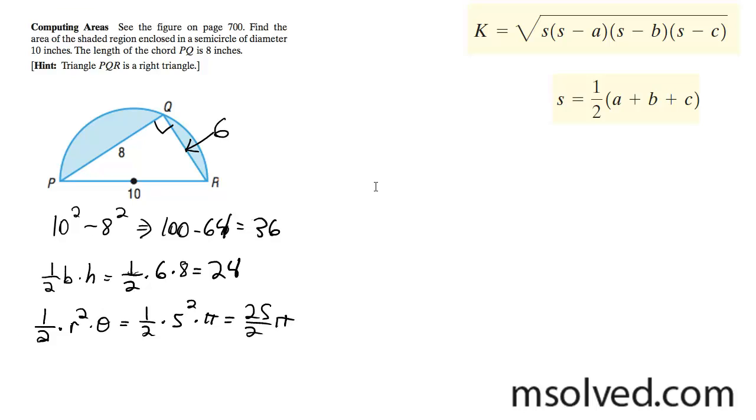And then we subtract the area we found, which is 24. We end up with 15.27 inches squared. This is the shaded area, and that's our solution.